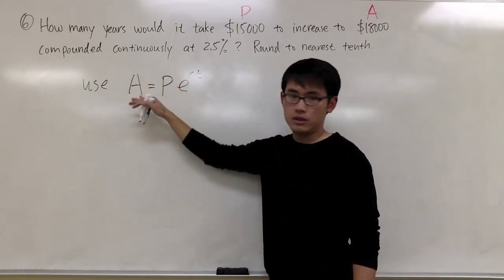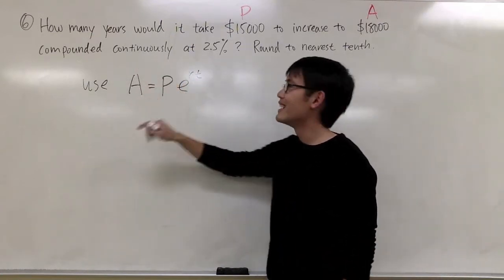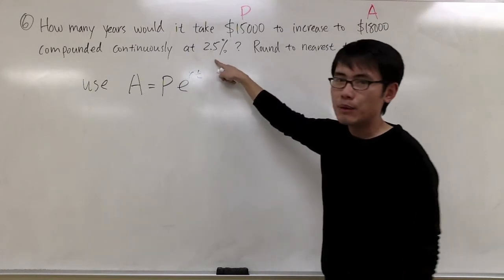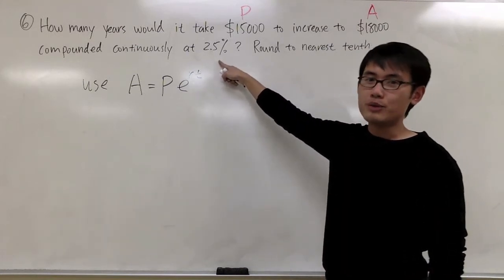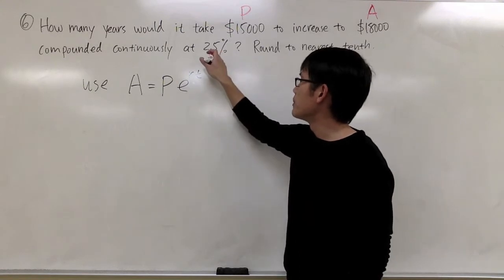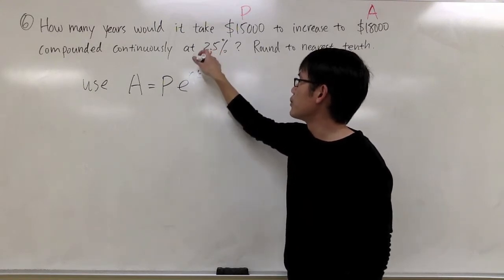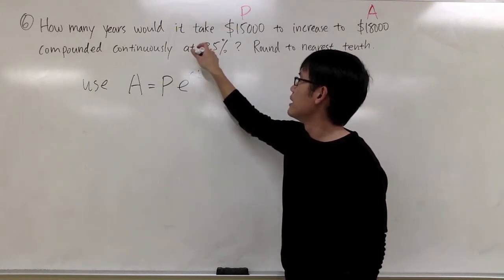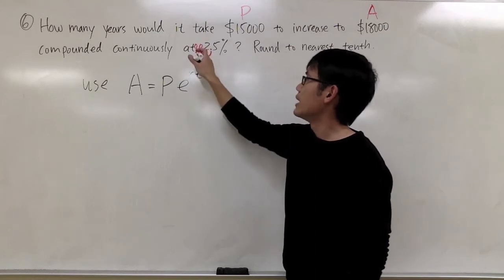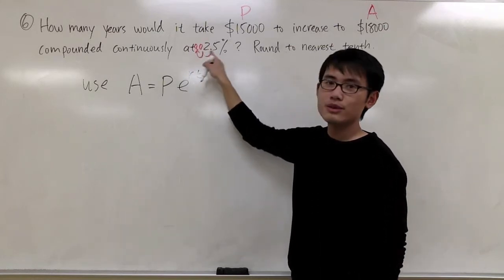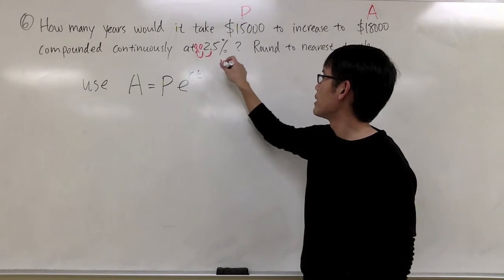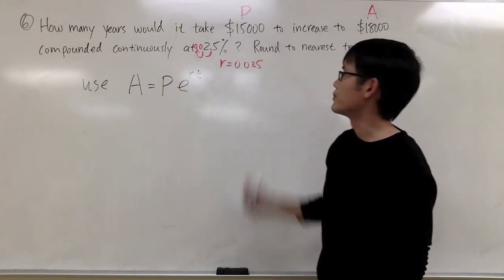Compounding continuously, use this formula right away. 2.5%, I will change this percentage to decimal, and this will be my rate. I will take the decimal point, move it once, move it twice to the left, and as you can see, we have 0.025. That will be the r.